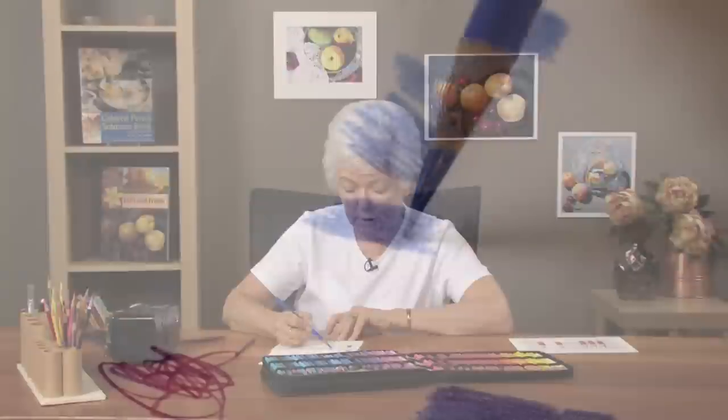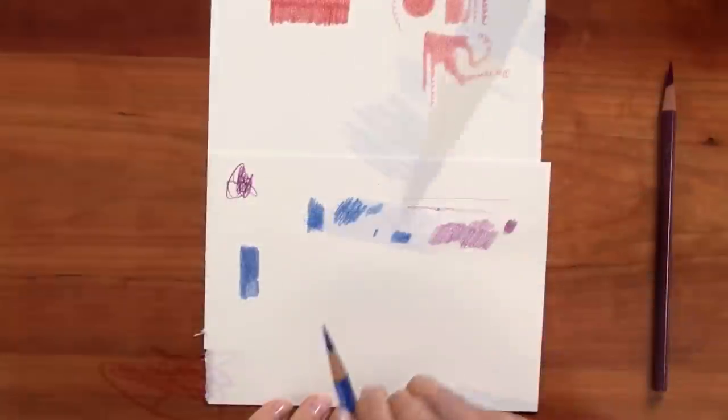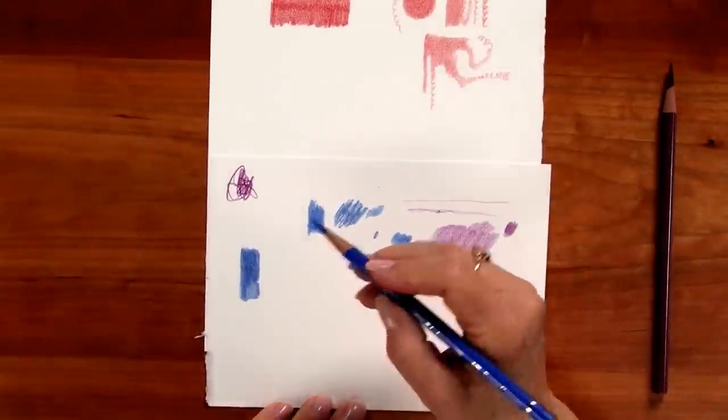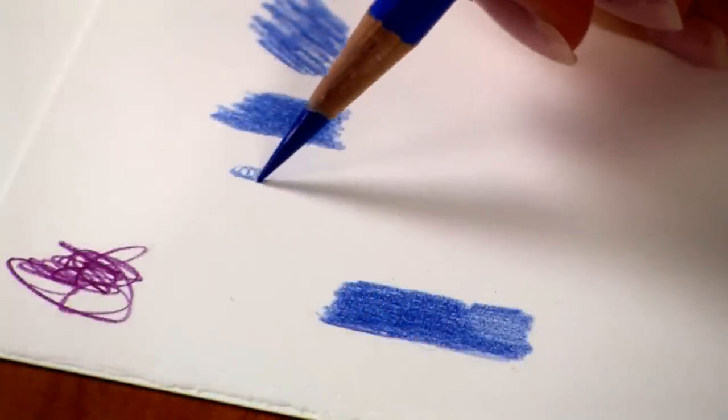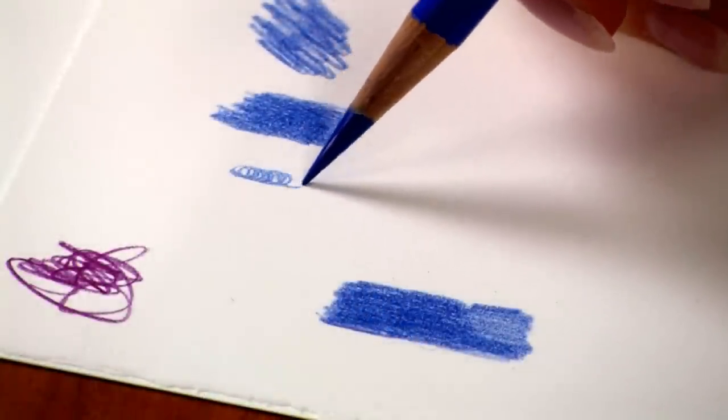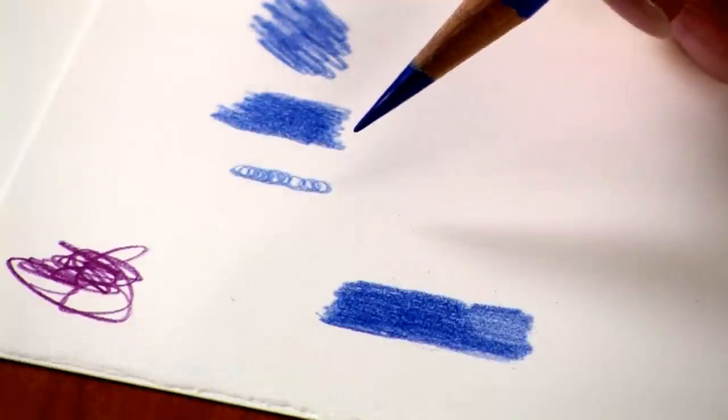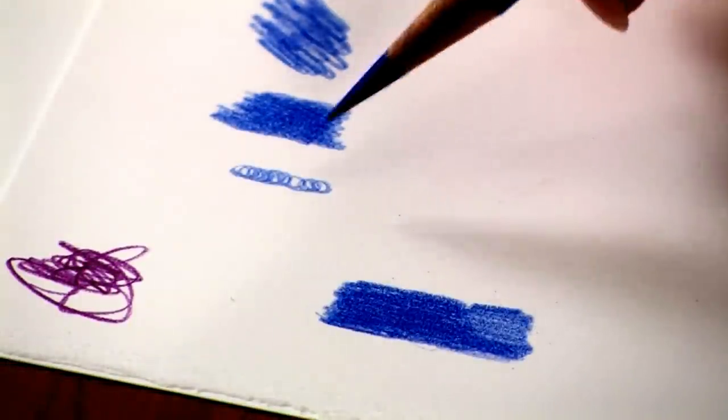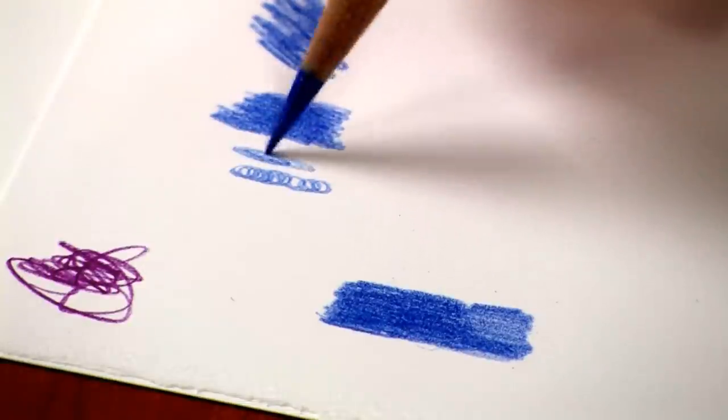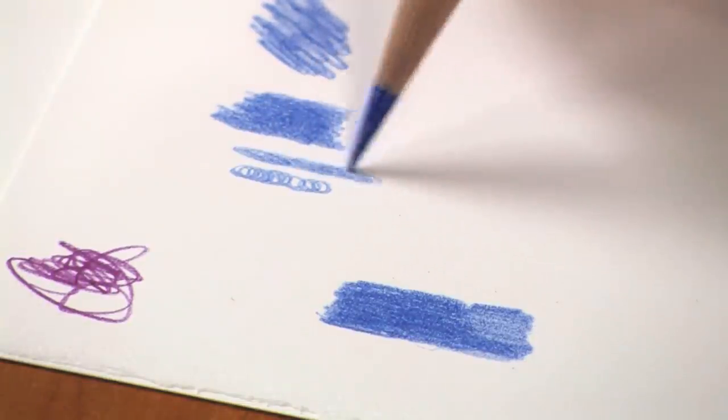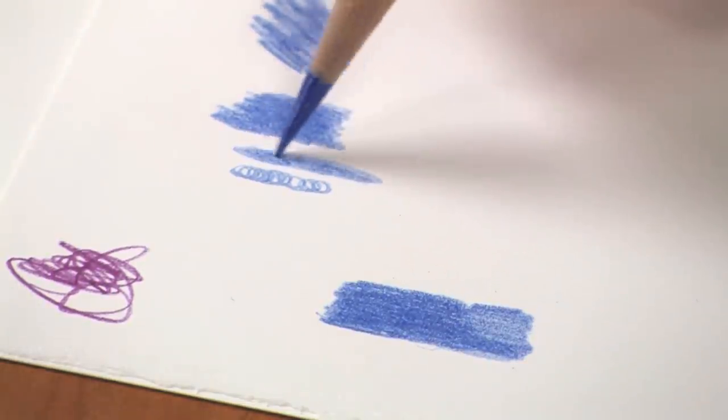I do have students that, when I explain this to, are trying to do a circular stroke that looks like this. Trust me, this one is not going to work. It needs to be these ovals and they need to overlap one another and do it like this.